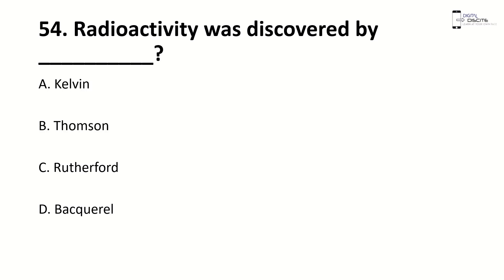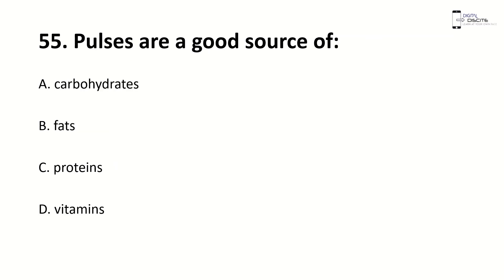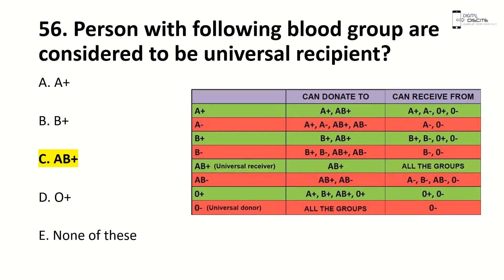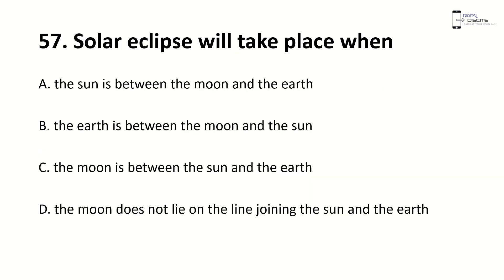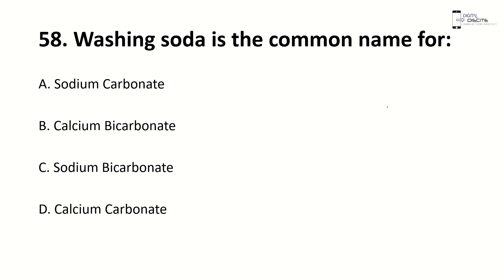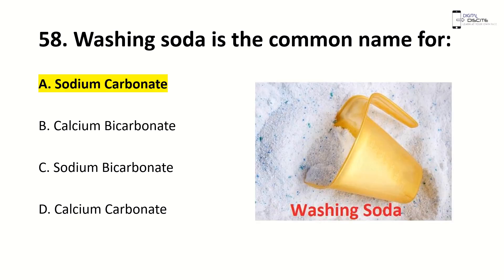Radioactivity was discovered by — right answer is D, Becquerel. Eggs are a good source of — right answer is C, protein. Persons with which blood group are considered universal donors? Right answer is O negative. And the universal recipient would be AB positive. Solar eclipse will take place when the moon is between the sun and the earth. For a lunar eclipse, the earth is between the sun and the moon. Washing soda is a common name for — right answer is A, sodium carbonate.